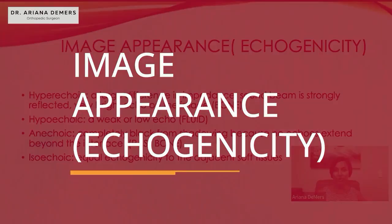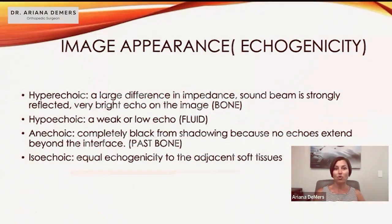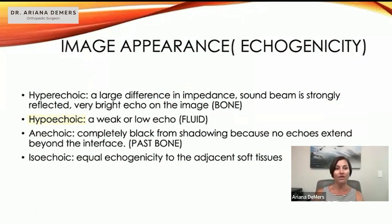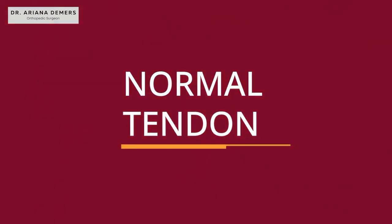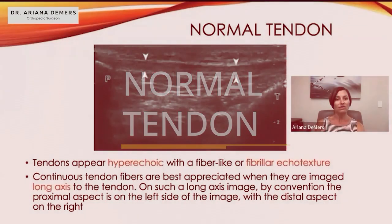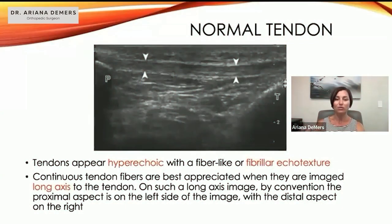When we talk about image appearance, we have hyperechoic, hypoechoic, anechoic, and isoechoic. We'll go through tissues and explain the echotexture as well as the echogenicity.